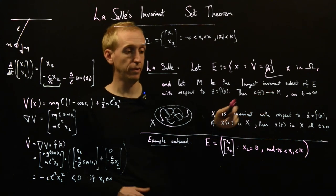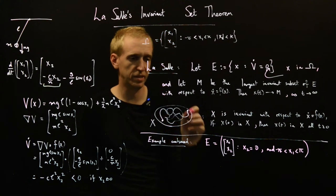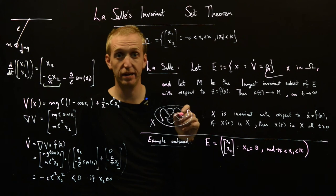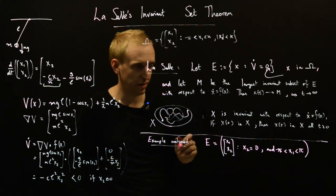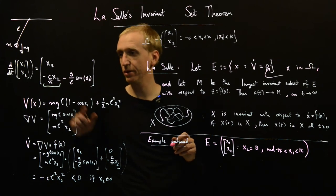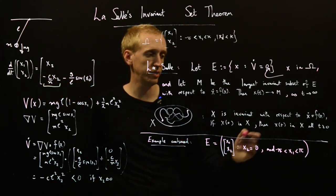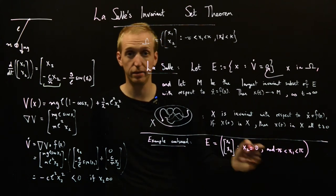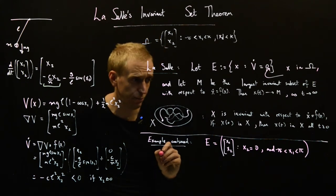So what does that mean? So the set is invariant if we start at any point in there, we'll stay at the point in there. So how can we start to reason about this? Well, to reason about this, we have to look at our dynamical equation and see what the consequences are for starting at some point in this set E. So if we start in E, then x2 is equal to zero.